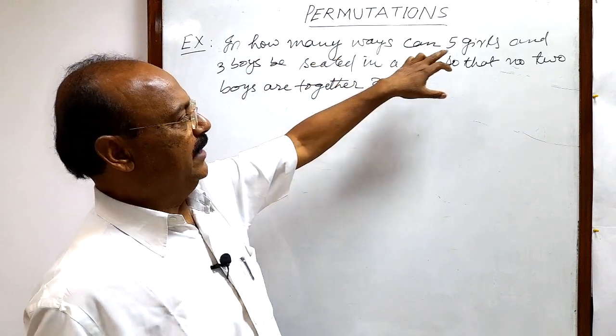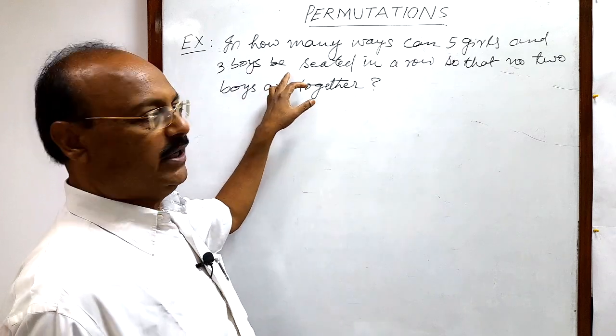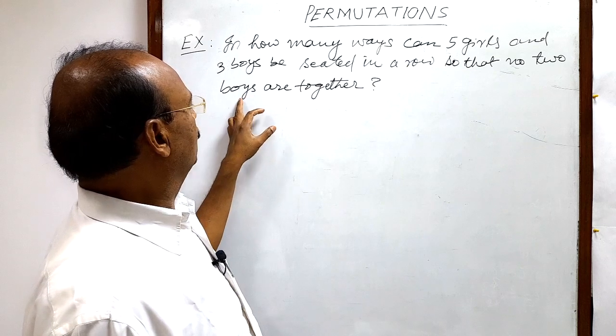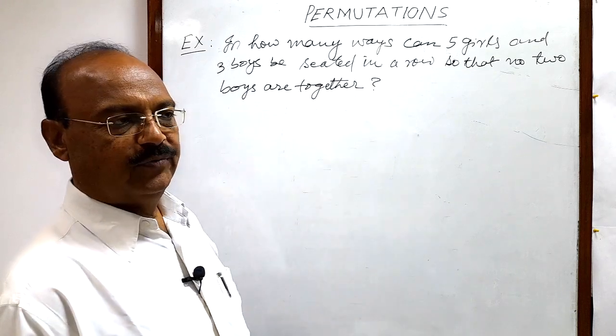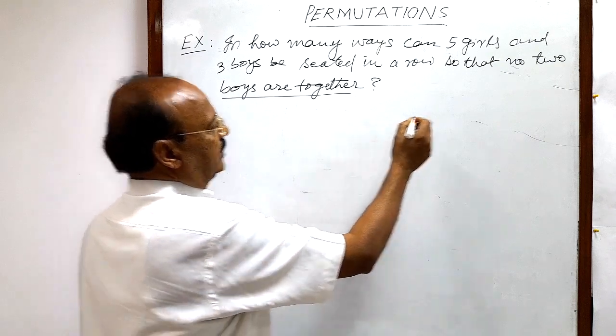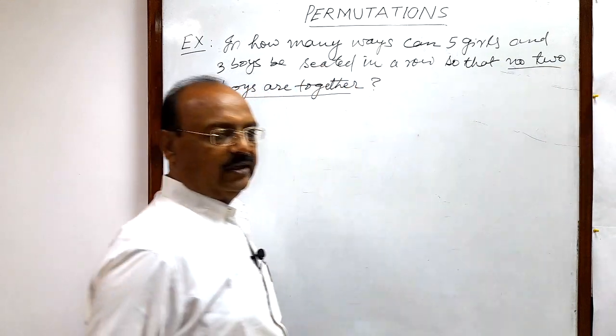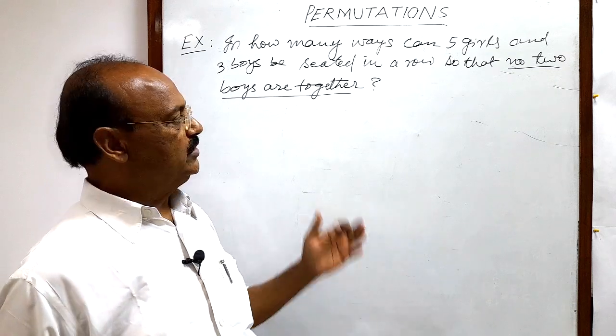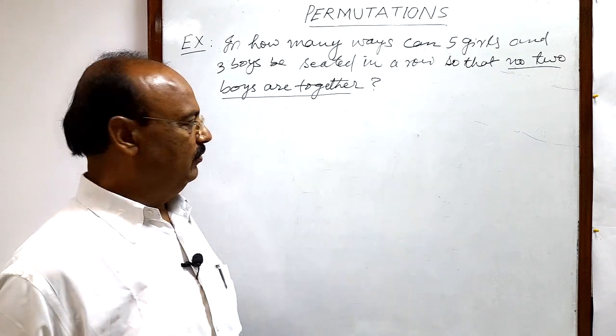In how many ways can five girls and three boys be seated in a row so that no two boys are together? We have to note this point that no two boys are together. So how many arrangements will be possible in this way?